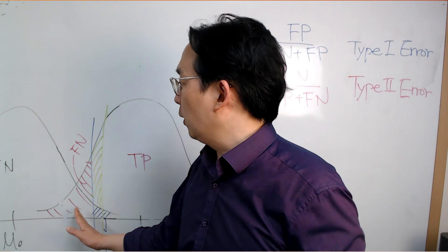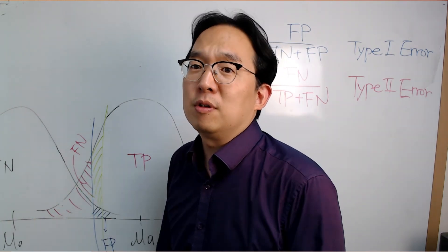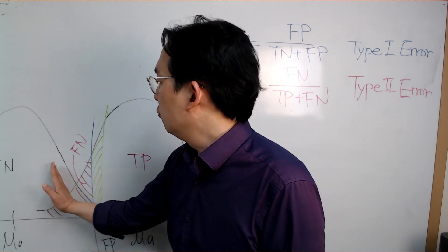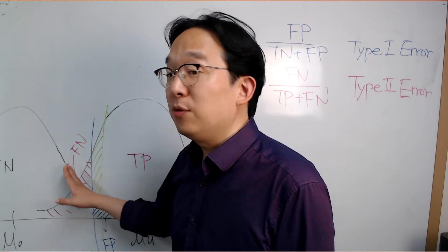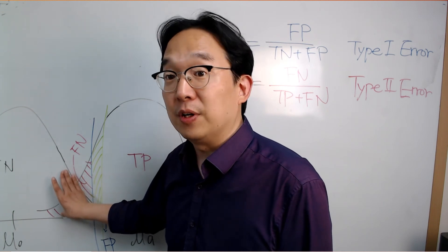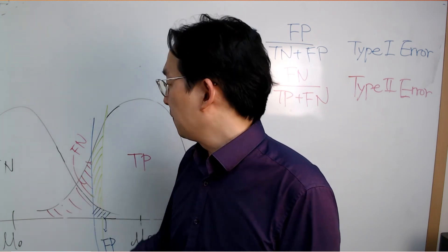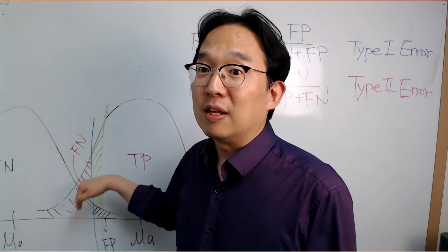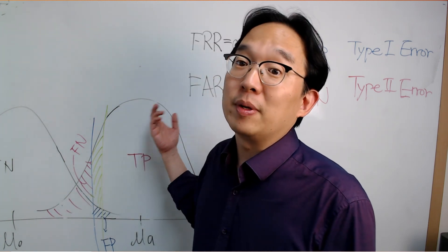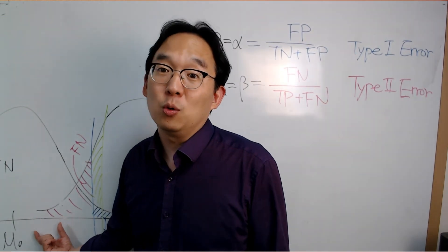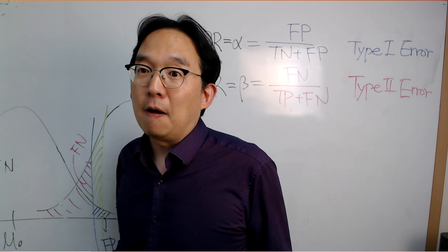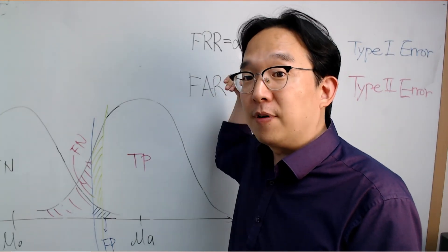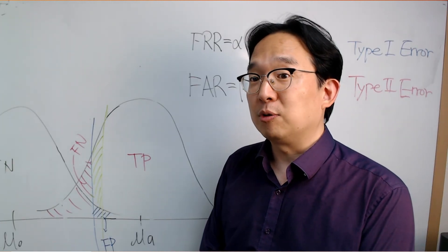On the other hand, if you push the threshold to the left — meaning almost any symptom triggers a positive call — then alpha becomes very large and many healthy people get hospitalized, but the positive side is that beta is minimized. Most true patients will be correctly classified and hospitalized, minimizing the number of asymptomatic infected individuals walking around. So there is a clear trade-off between the false rejection rate (FRR) and the false acceptance rate (FAR).